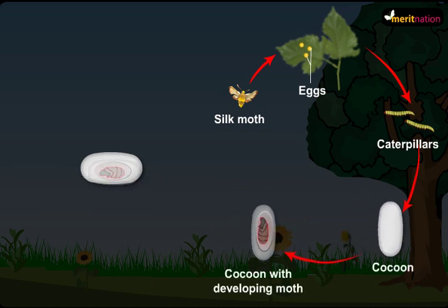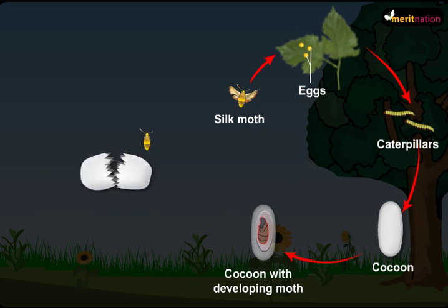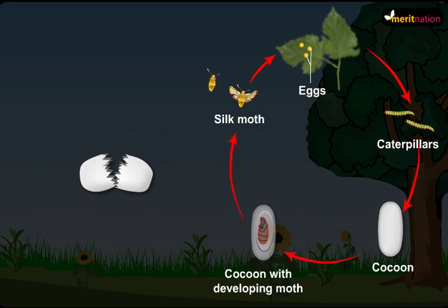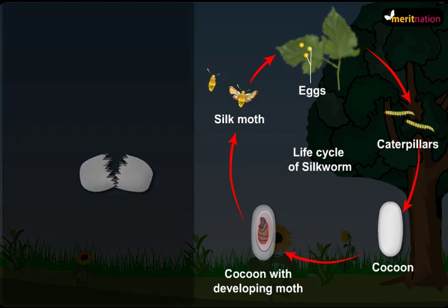After some time, the pupa enters the adult stage and emerges out of the cocoon as a moth. The entire process thus continues and is known as the life cycle of a silkworm.